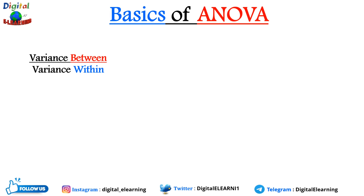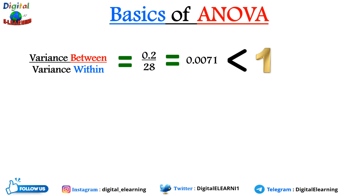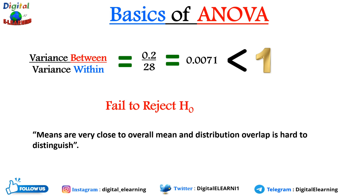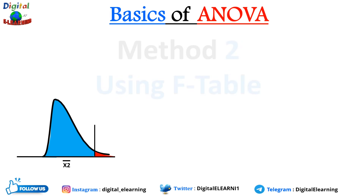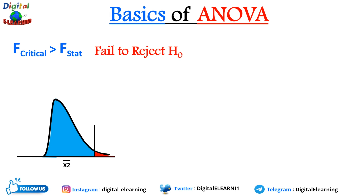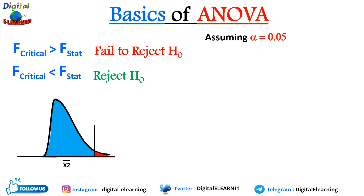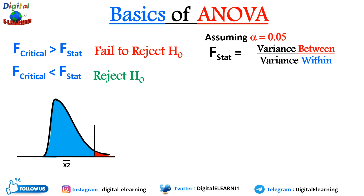Putting these values into the formula: variance between / variance within = 0.2 / 28 = 0.0071, which is less than 1, so we fail to reject the null hypothesis — meaning the means are very close to the overall mean and the distributions overlap. Now using the second method with the F-table: if F-critical > F-stat we fail to reject; if F-critical < F-stat we reject. Assuming alpha = 0.05, our F-stat is 0.0071.